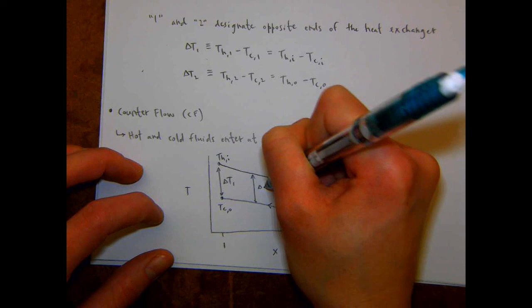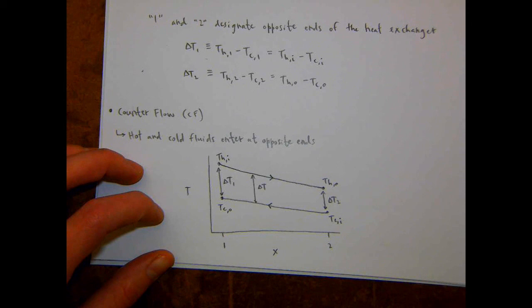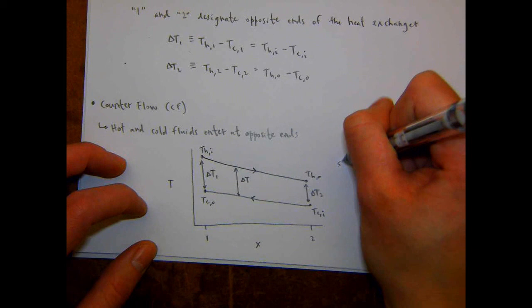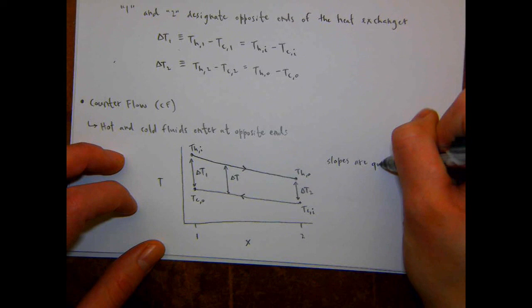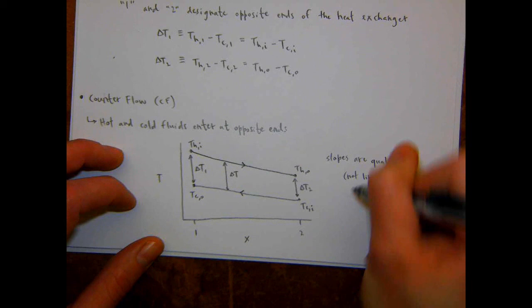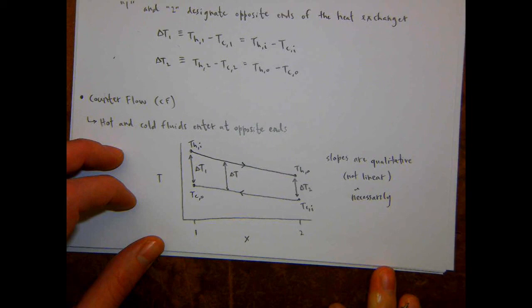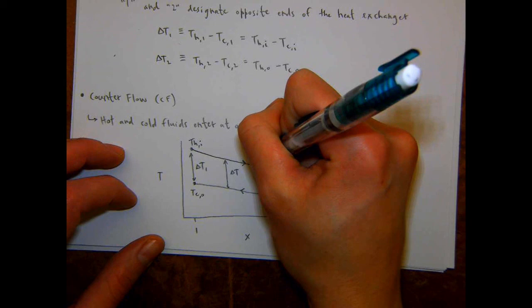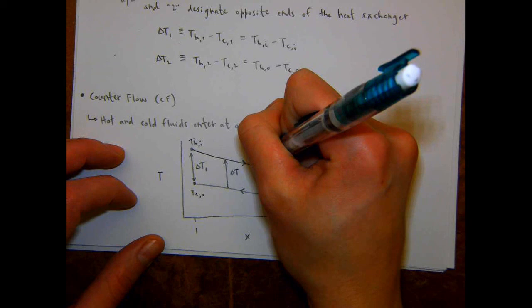A student asks whether the temperature profiles are linear. They are not necessarily linear — they could be any shape. The slopes are qualitative. We'll talk on Monday about the heat capacity rate and how it can change what the slopes look like depending on the properties of the different fluids.